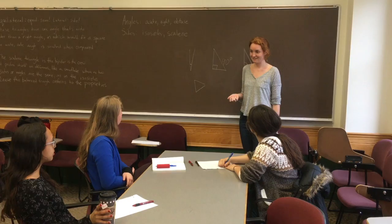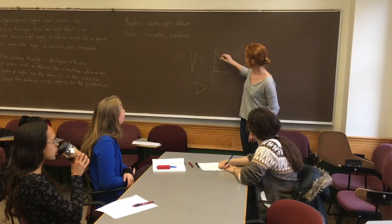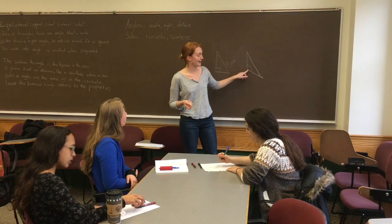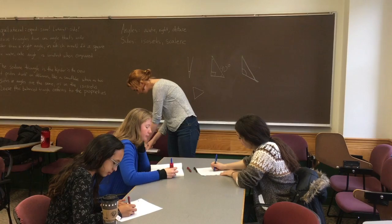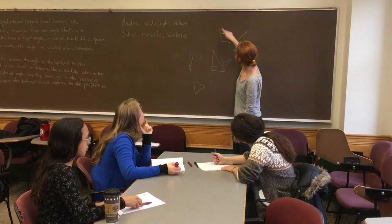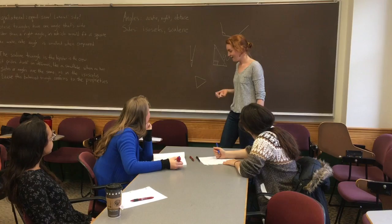How many acute angles does a right triangle have? Two. Is it possible to have an obtuse triangle that has more than one obtuse angle? Try drawing one and see what happens. You can see that you can't connect the triangle when there are two angles that are wider than 90 degrees.